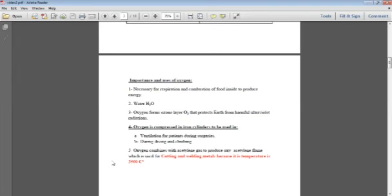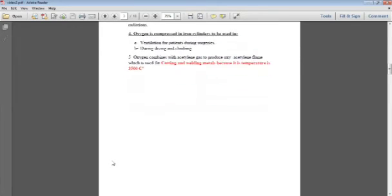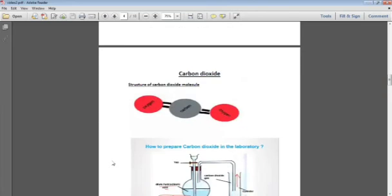Now, oxygen also can combine with acetylene gas to produce oxyacetylene flame. And this flame, the temperature of this flame is about 3,500 degrees Celsius, and it's used for cutting and welding metals.